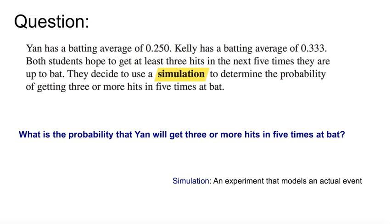The goal is to choose a model to determine the probability of a real-life event. Here's a question. Yan, the catcher for the Cleveland Indians, former Toronto Blue Jay, has a batting average of 0.250. Kelly has a batting average of 0.333.